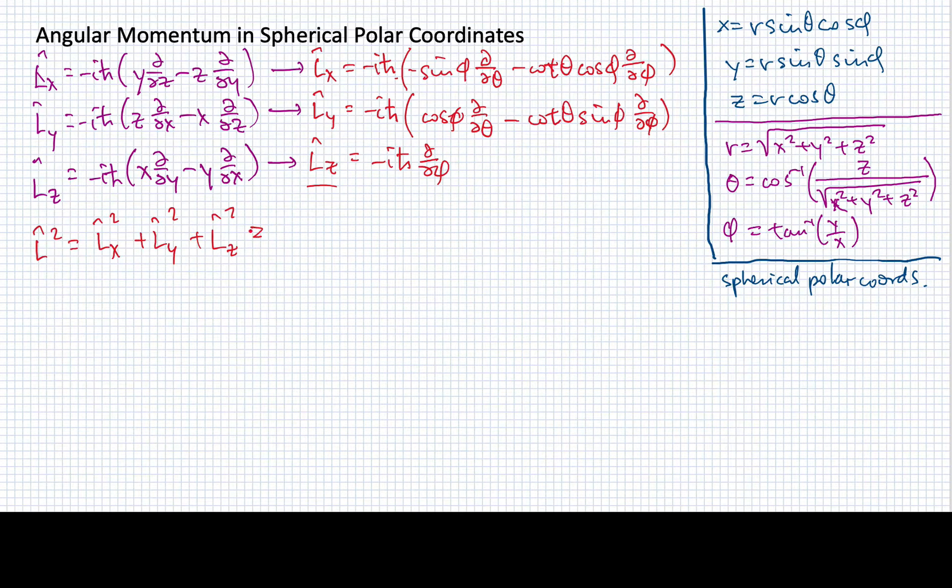Now, if we were to go through the long arduous process of doing so, we would find that this in spherical polar coordinates would be equal to the following expression. We'd have 1 over sine of theta d/dθ sine of theta d/dθ plus 1 over sine squared of theta d²/dφ².